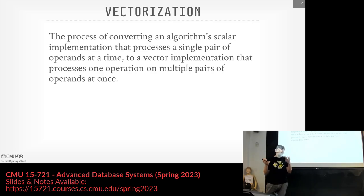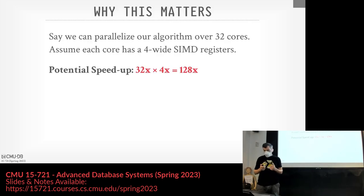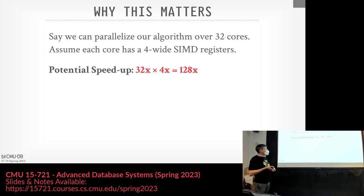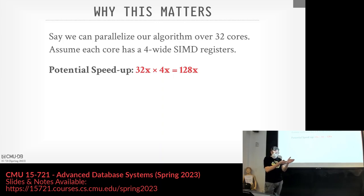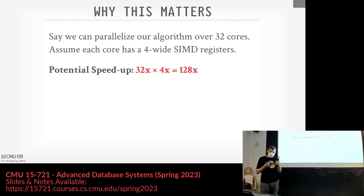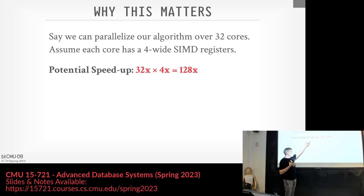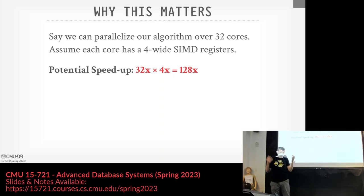It's not enough just to add two numbers together — we want to do scans and other operations, so we use low-level SIMD primitives to build a vectorized execution engine. This matters because it's additional parallelism we can exploit. For example: an algorithm parallelized across 32 cores, each with a 4-wide SIMD register, gives 32×4 = 128× speedup over a scalar single-threaded version.